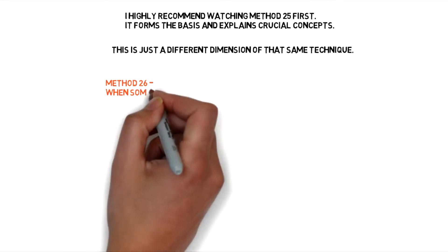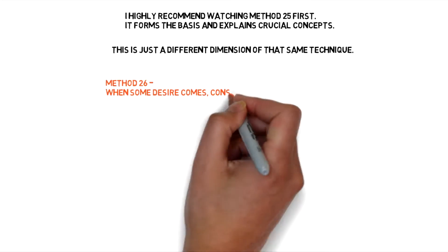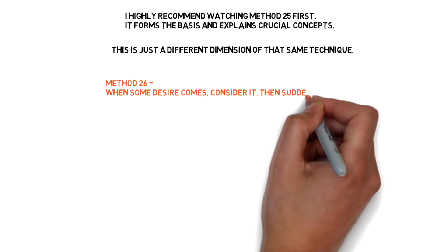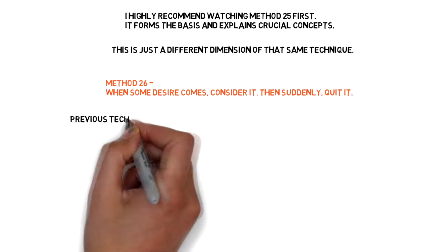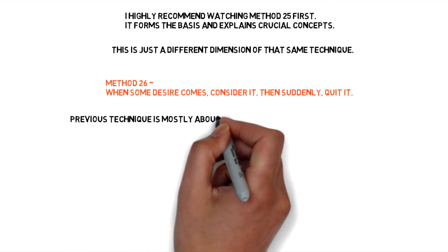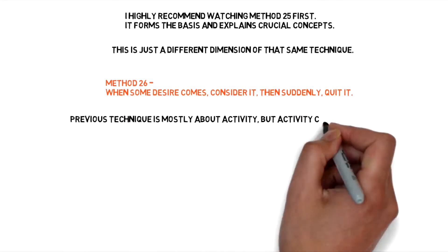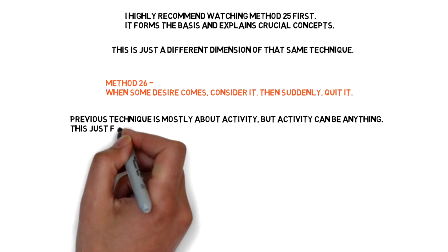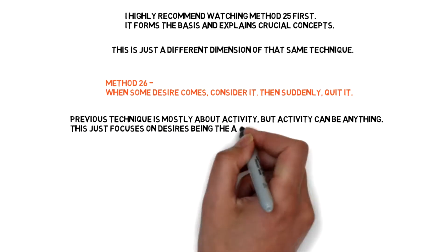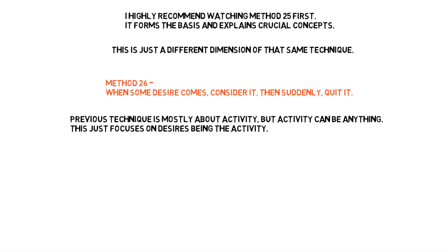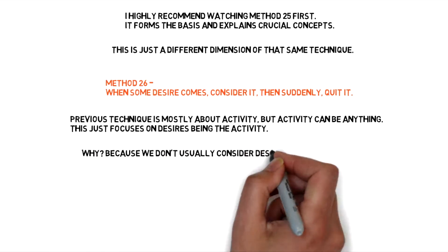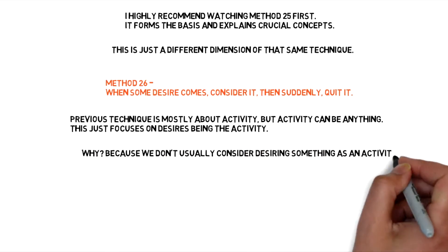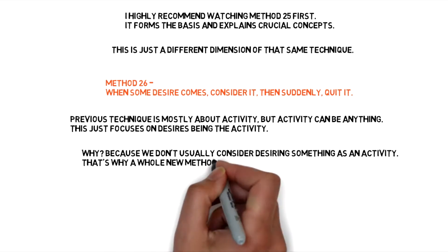When some desire comes, consider it, then suddenly quit it. The previous technique is mostly about activity, but activity can be anything. This just focuses on desires being the activity. Because we don't usually consider desiring something as an activity, that's why a whole new method is dedicated for that.